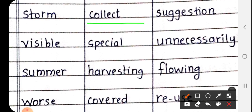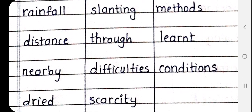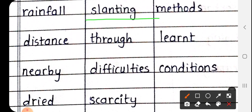Harvesting. H-A-R-V-E-S-T-I-N-G. Here you have harvesting, according to rain water harvesting. Next, slanting. S-L-A-N-T-I-N-G, slanting.